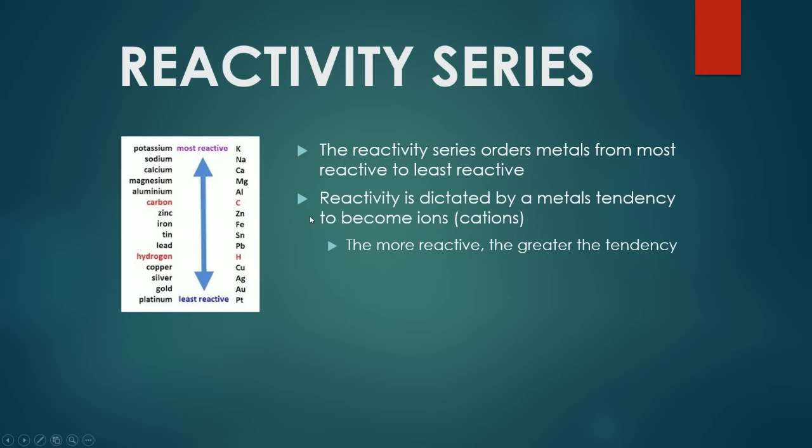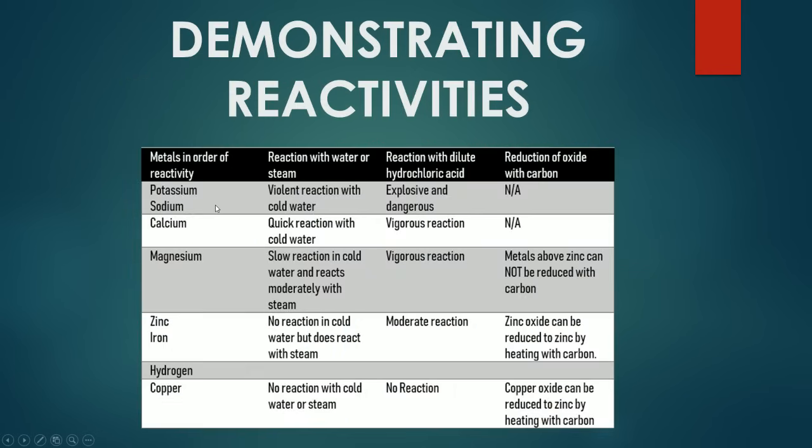Now that we know that there are obviously variations in reactivities amongst metals, you can actually take a look at the reactions of all of these metals with certain things like water, dilute hydrochloric acid, and potential reduction of the metallic oxide with carbon to determine which metals are more reactive than the other. There's obviously a strict pattern here. Potassium and sodium, they're quite reactive, and they react violently with cold water, whereas as you go down the list, the reaction becomes more dilute.